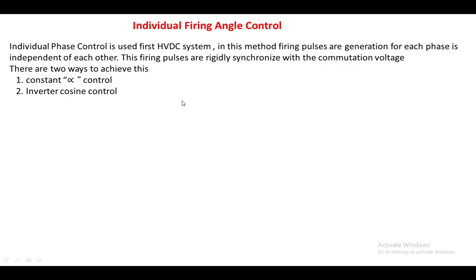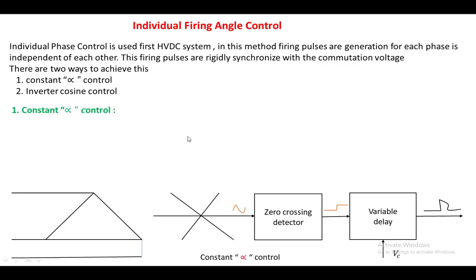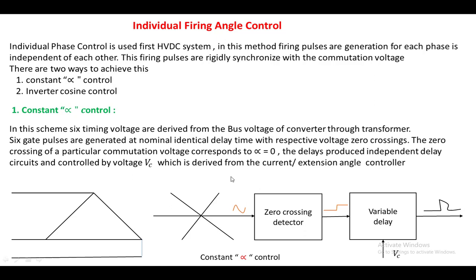Now we will look at constant alpha control. This block diagram shows how constant alpha control is generated. A transformer is connected to the buses before the converter so that we obtain six line voltages. These six line voltages are fed to a zero crossing detector, whose main function is to generate pulses whenever the voltage crosses zero. Based upon the control voltage Vc, the firing pulse will be generated to the respective valve. In this manner, pulses are generated to the valve in constant alpha control.